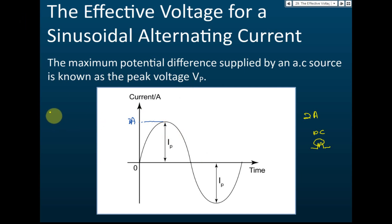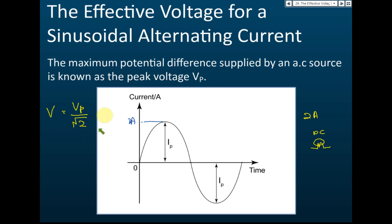The effective voltage can be calculated using the formula: V_effective equals the maximum voltage divided by the square root of 2. This same formula is used to find the effective current. We call the maximum current the peak current, Ip, and the effective current is Ip divided by the square root of 2.